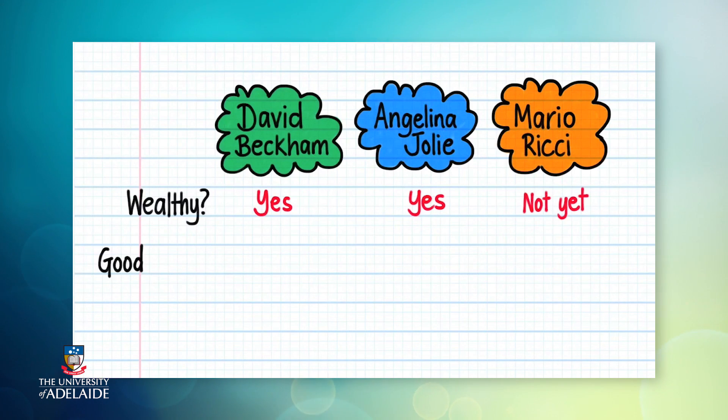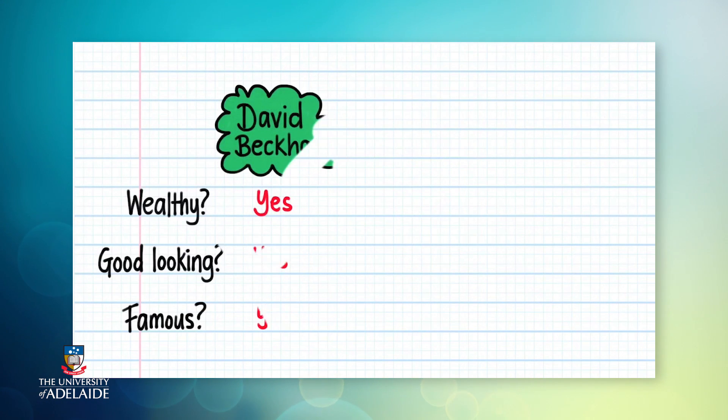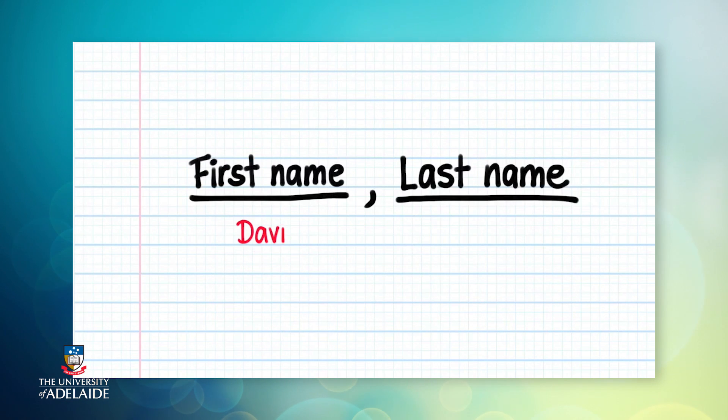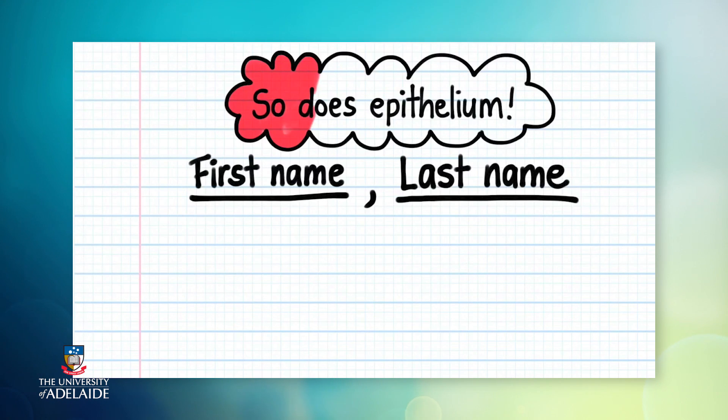Are we all fabulously wealthy? Incredibly good looking? Or maybe famous all around the world? Well, I may not be any of those things, but we do share at least one other thing in common. Each of us has two parts to our name: a first name and a last name. And guess what? So does epithelial tissue.